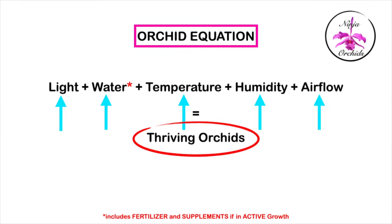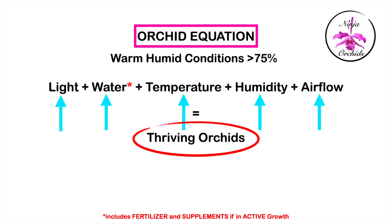Now let's go to warm, humid conditions as an example and see how that affects our orchid equation. Light can be as high as necessary if water is readily available while temperatures are high and the humidity is above 70% with good airflow. The risk of not providing adequate airflow in these conditions is leaf spotting and root rot or structures rotting. This equation is in actual fact the ideal — if we could all achieve this balance, our orchids would thrive and growing orchids would require the least amount of effort.